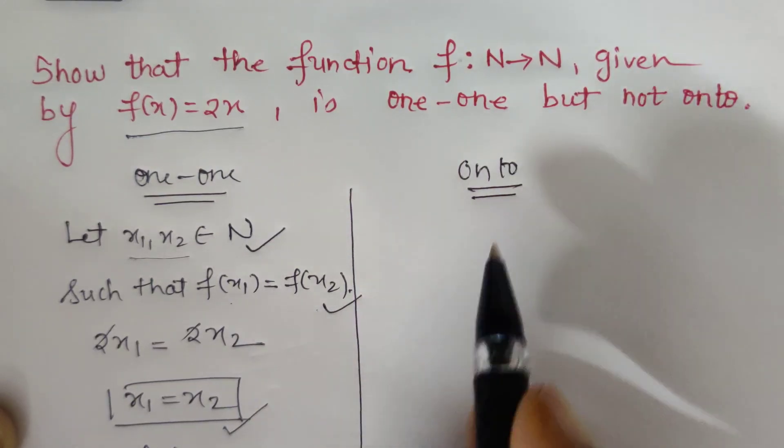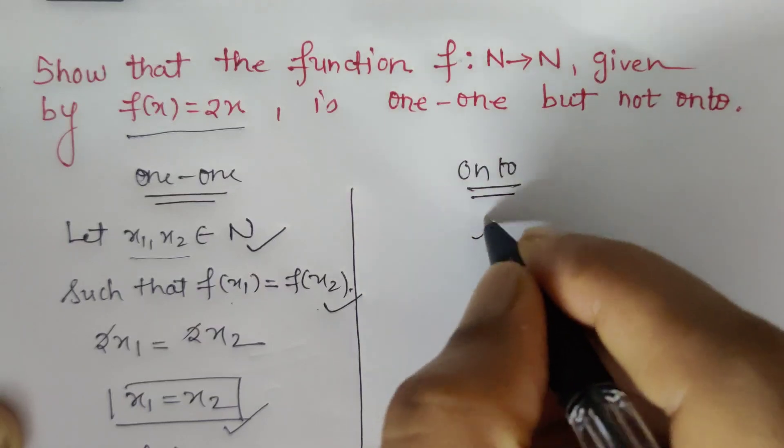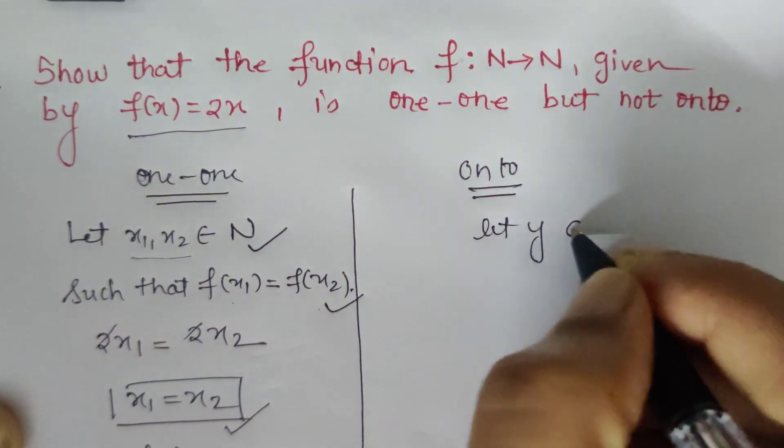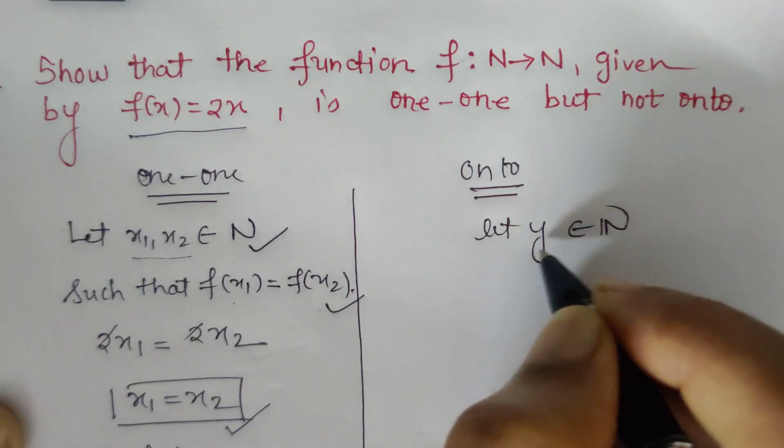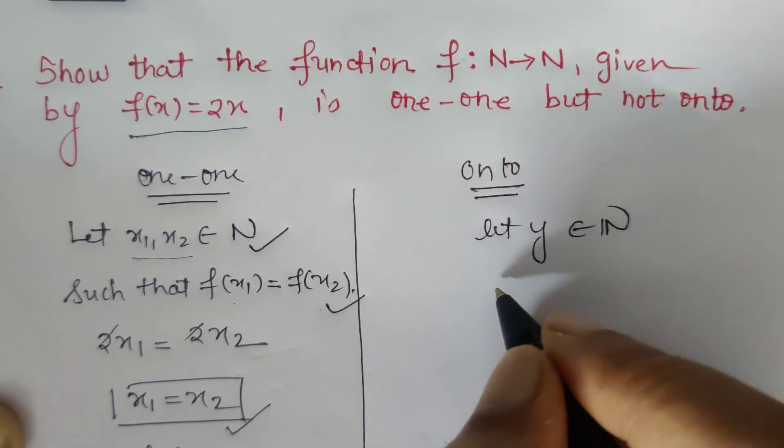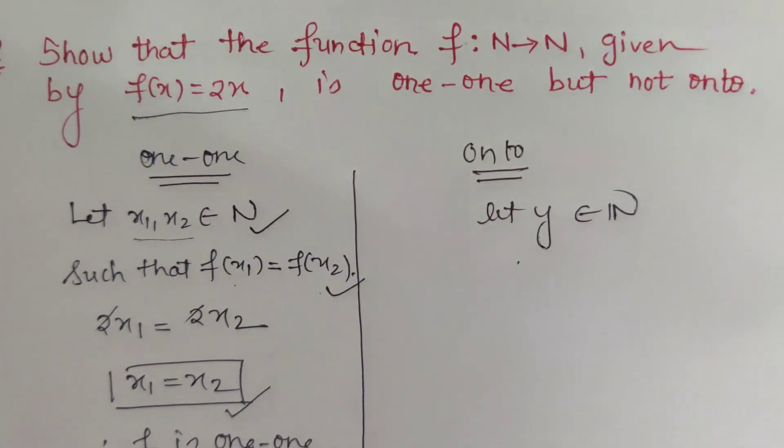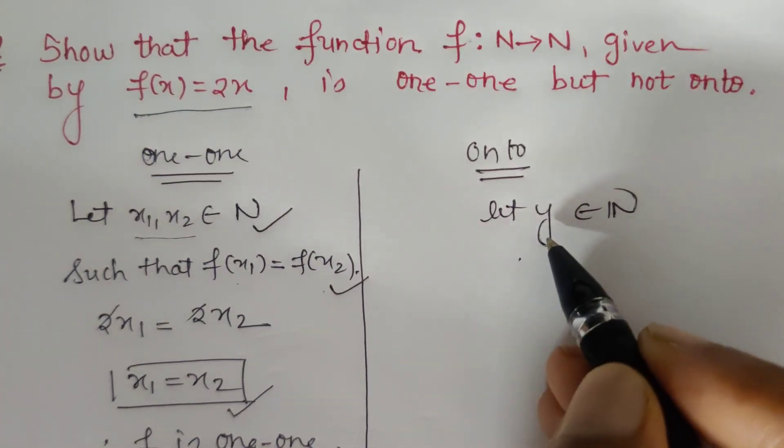Now let's come to onto. Here we have to assume an element in codomain, like y belongs to N. The codomain is the set of natural numbers. Now let's prove the function is onto.